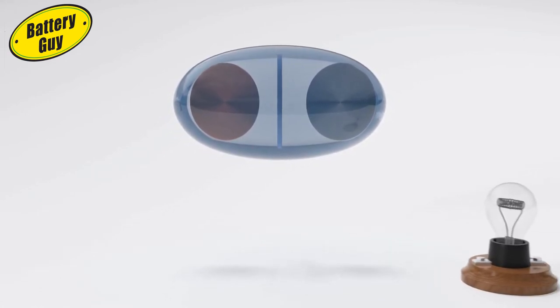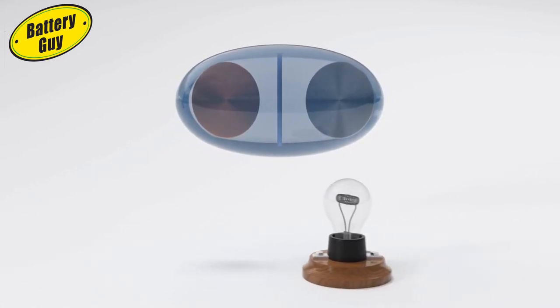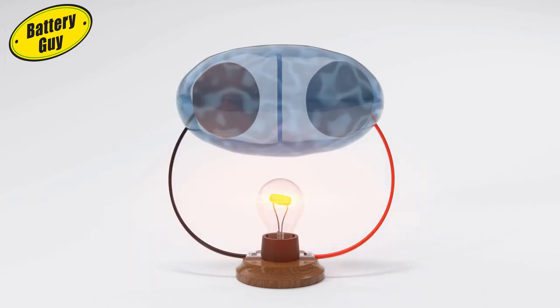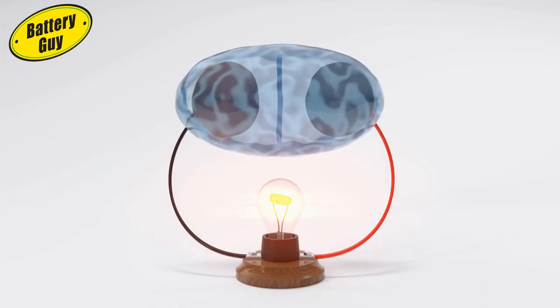In this state, the cell is almost inactive. It only has the potential to create electricity. When connected to an appliance, a chemical reaction takes place within the materials, which causes electrons to flow through the circuit.